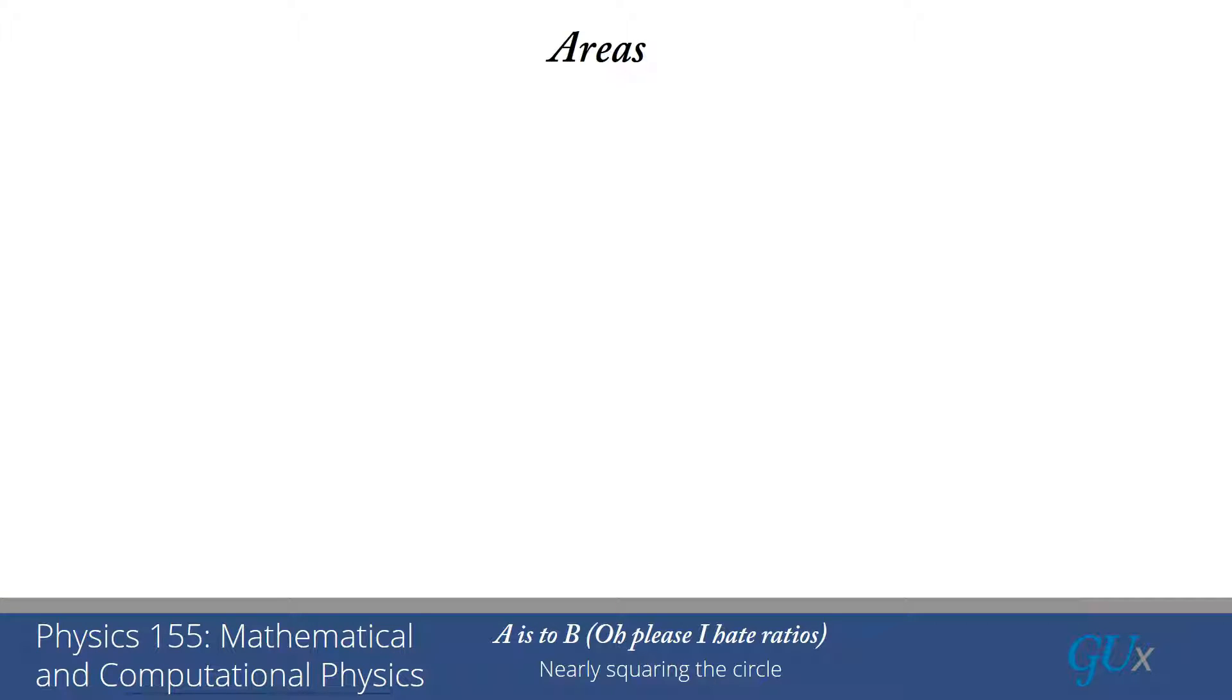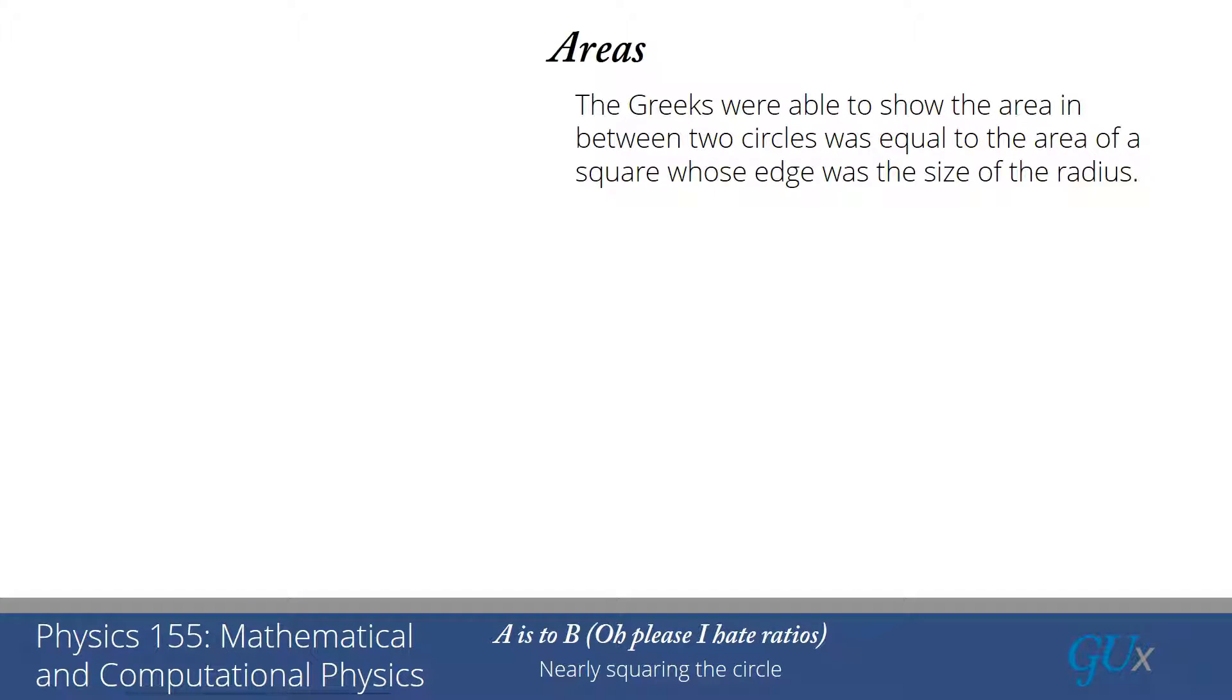So let's move on and first take a look at areas. There is a very famous problem that the Greeks were interested in, and that was called squaring the circle, where they wanted to find a square that had the exact same area as a circle of a given radius.